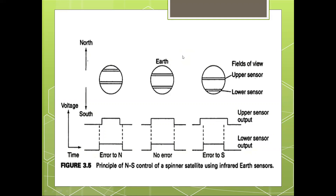If a constant torque exists about an axis, when the upper or lower speed limit of this wheel is reached, it must be unloaded by operating point. A closed-loop control of this type of attitude system is employed on the satellite to maintain the correct attitude.